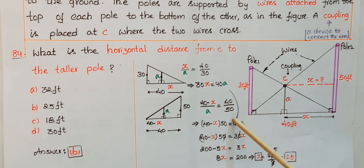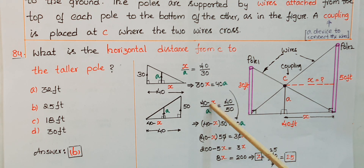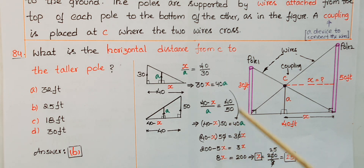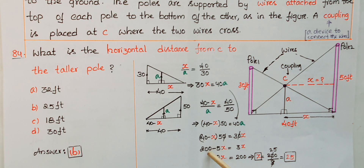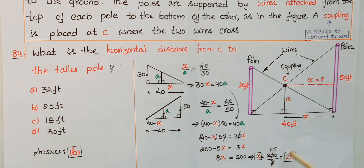Cross-multiplying gives 40a = 50(40 − x), so 40a = 2000 − 50x. From the first equation, 40a = 30x, so substituting: 30x = 2000 − 50x. Dividing through by 10: 3x = 200 − 5x, giving 8x = 200, so x = 200/8 = 25.